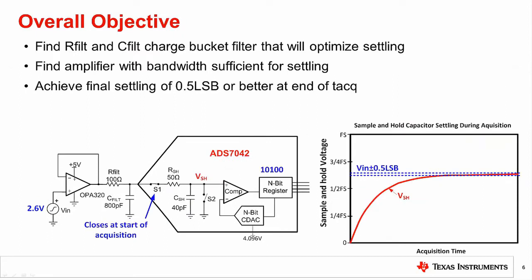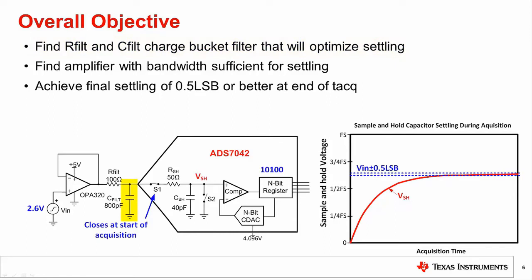The overall objective of this video is to provide a design method that will facilitate the selection of the amplifier and external RC charge bucket circuit. For the RC charge bucket circuit, we will find values of R and C that facilitate settling but also maintain stability for the amplifier. The capacitor in this circuit provides a large reservoir of charge that will provide a quick charge dump to the internal sample and hold capacitor at the start of the acquisition period. This resistor helps maintain stability on the amplifier, as it cannot directly drive the charge bucket capacitor. The amplifier needs sufficient bandwidth to complete the settling to less than one-half LSB by the end of T-acquisition.